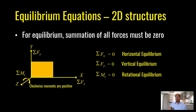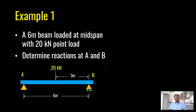In three dimensions: summation of forces in x, y, and z direction equal to zero, and summation of moments in x, y, and z equal to zero. Let's take this example: we have a six-meter beam with a central point load of 20 kilonewtons. We have to determine reactions at A and B.